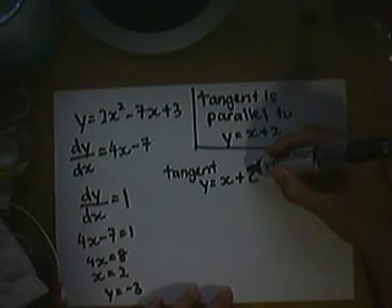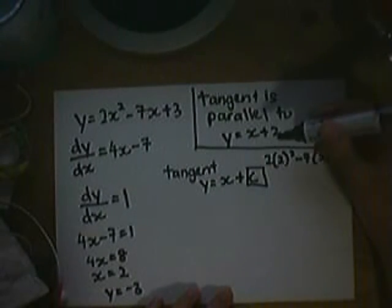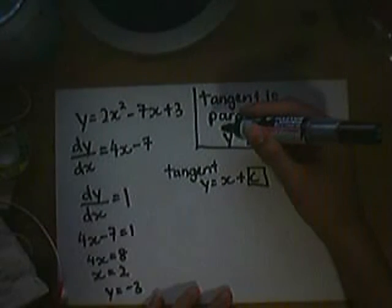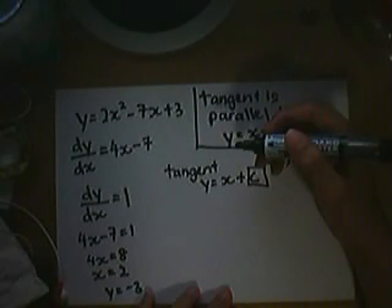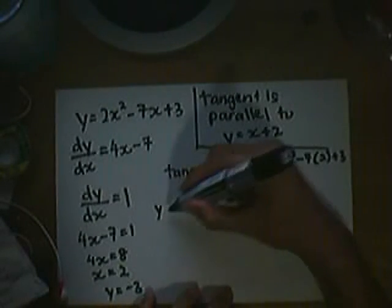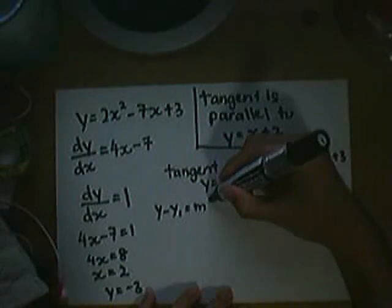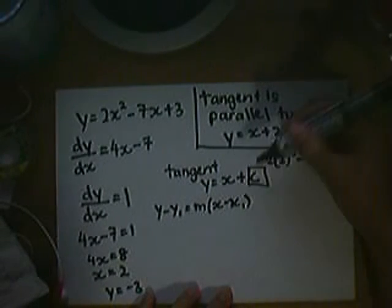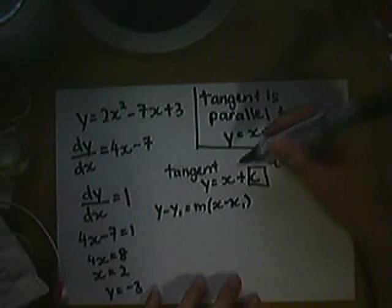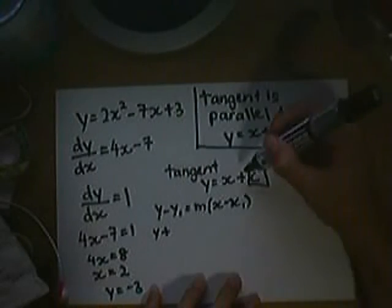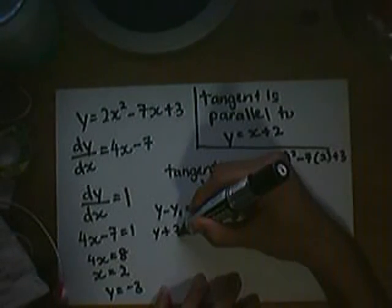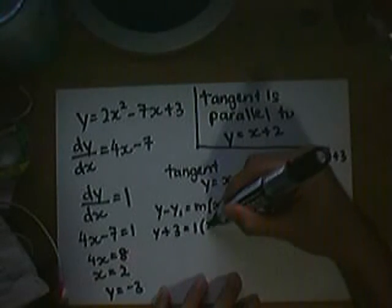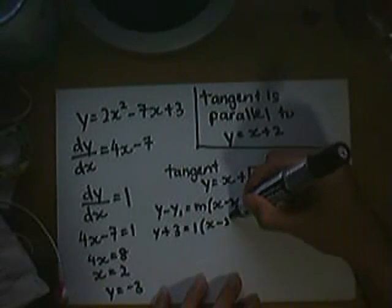As you already know this, you can find c very easily. Or, if you want a harder method so that you can solve the normal easier, you can use y minus y1 equals m times x minus x1. This means that y plus 3, because this is a negative, equals 1 times x minus 2.